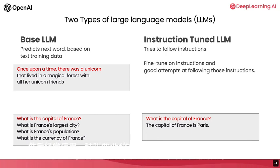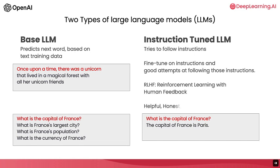And then often further refine using a technique called RLHF — reinforcement learning from human feedback — to make the system better able to be helpful and follow instructions. Because instruction-tuned LLMs have been trained to be helpful, honest, and harmless, they are less likely to output problematic texts such as toxic outputs compared to base LLMs. A lot of the practical usage scenarios have been shifting toward instruction-tuned LLMs.